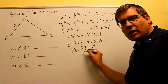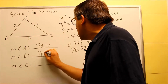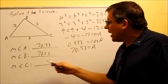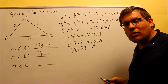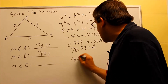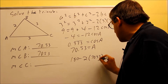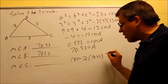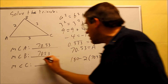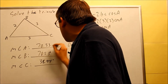Since I already know my answer for A is 70.53 degrees, automatically, because it's an isosceles triangle, I know that these two angles have to match, so B is also 70.53 degrees. The last thing I have to do is subtract both from 180: 180 minus 2 times 70.53, which leaves me with the final answer of 38.94 degrees. So 38.94 degrees is the angle measurement for angle C.